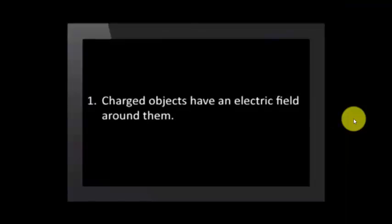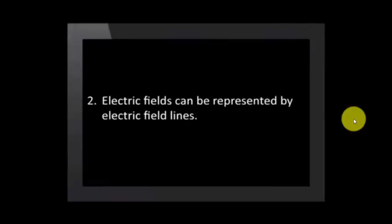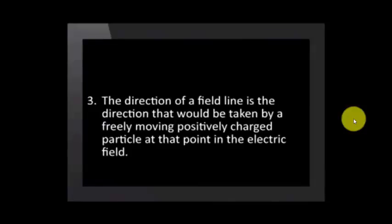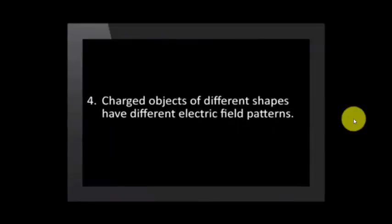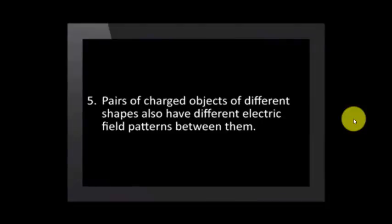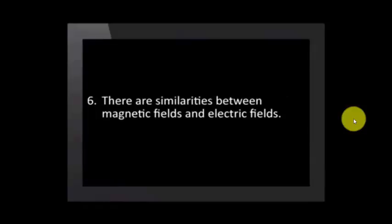Thanks, KK, for those demonstrations. Let's recap what we learned today: 1. Charged objects have an electric field around them. 2. Electric fields can be represented by electric field lines. 3. The direction of the field line is the direction taken by a freely moving positively charged particle at that point. 4. Charged objects of different shapes have different electric field patterns. 5. Pairs of charged objects also have different field patterns between them. And finally, there are similarities between magnetic fields and electric fields.